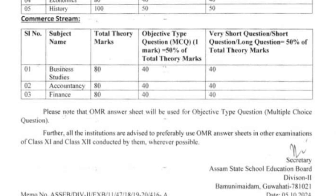For the Commerce stream: Business Studies is 80 marks theory and 20 marks practical. Of the 80 marks, 40 marks is MCQ, and the remaining 40 marks covers very short questions, long questions, and short questions. Finance is 80 marks — 40 marks MCQ — with long questions, short questions, and very short questions.